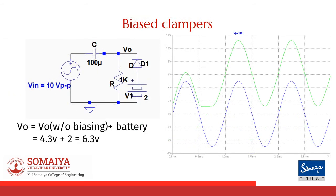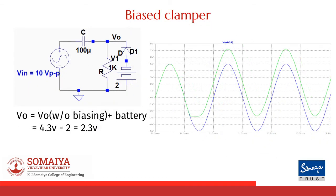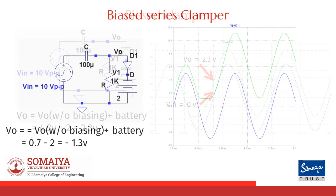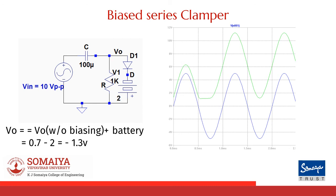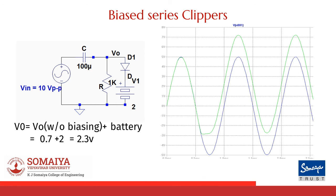The circuit shown here is a positive clamper with a plus 2 volts battery. The reference will shift from 0 volts to 4.3 volts due to positive clamping, plus 2 volts due to the battery, so the reference shifts to 6.3 volts. For a positive clamper with a minus 2 volts battery, the reference will shift from 0 volts to 2.3 volts. The next circuit is a negative clamper with a negative battery, so the reference will shift from 0 volts to minus 1.3 volts. The last example is a negative clamper with positive biasing, where the reference will shift from 0 volts to 2.3 volts as shown in the waveform.